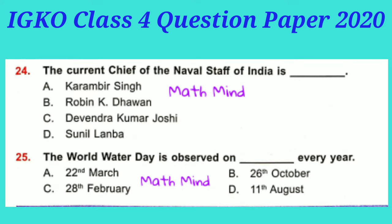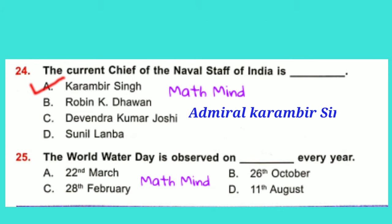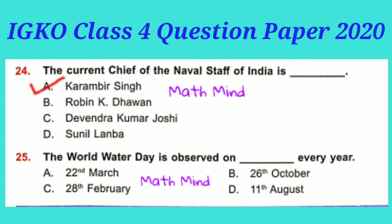Question No. 24: The current Chief of Naval Staff of India is dash. Option A is correct: Karambir Singh — Admiral Karambir Singh. Question No. 25: World Water Day is observed on dash every year. Option A is correct: 22nd March.